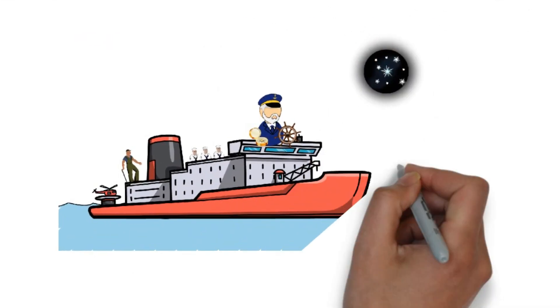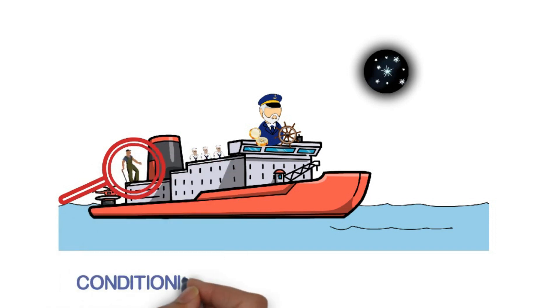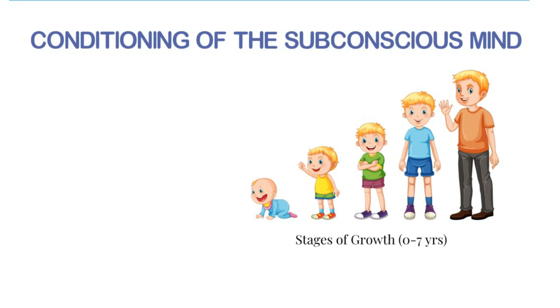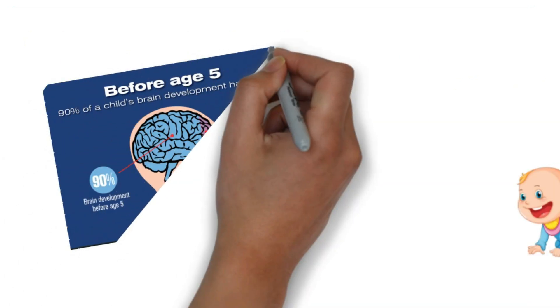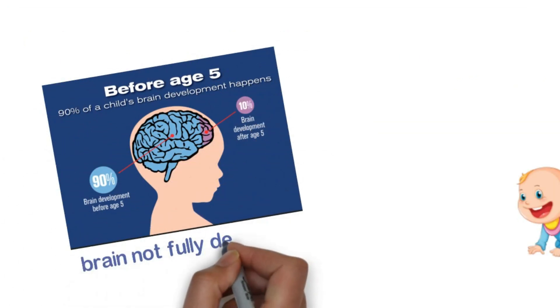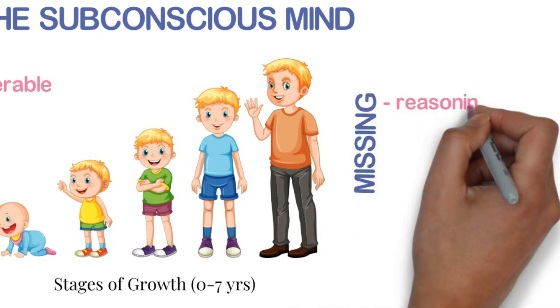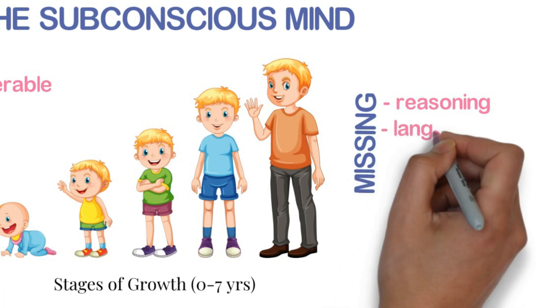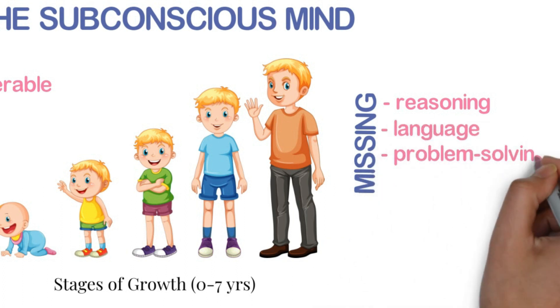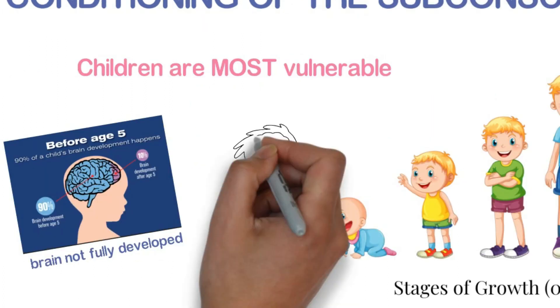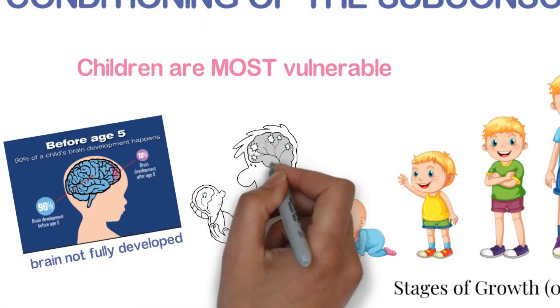So let's talk about how this mind gets conditioned. Most of the conditioning happens between the ages of 0 to 7 because at that time a child's brain is not fully developed. At that age, children can't reason, they don't know good from bad, they haven't developed language skills, problem solving, and even critical thinking skills.